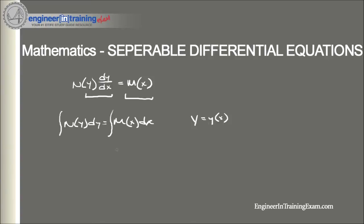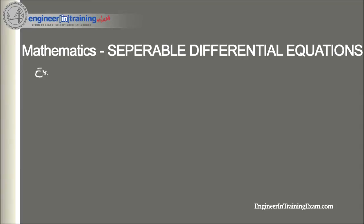Let's look at an example. We're given the initial value problem dy/dx = 6y²x where y(1) = 1/25. The first thing we need to do is rearrange this equation into the form of a separable differential equation and integrate, getting the y's on one side and the x's on the other side along with dy and dx.